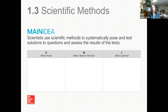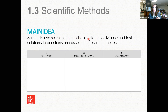We're on page 12, and here's our main idea for this section: scientists use scientific methods to systematically pose and test solutions to questions and assess the results of the tests. It's a stepwise process — we pose questions, test solutions to those questions, and then assess the results.